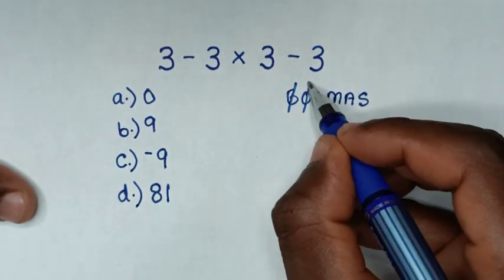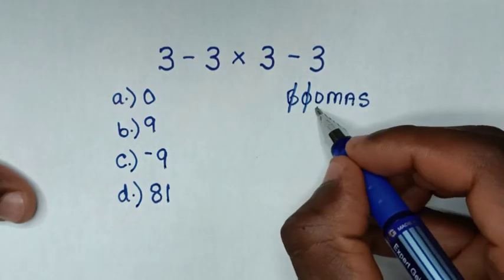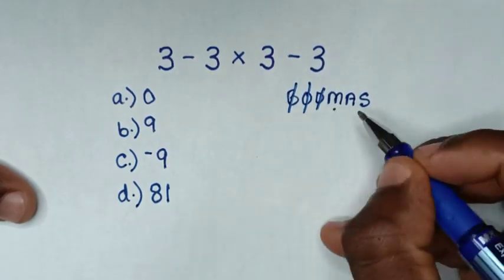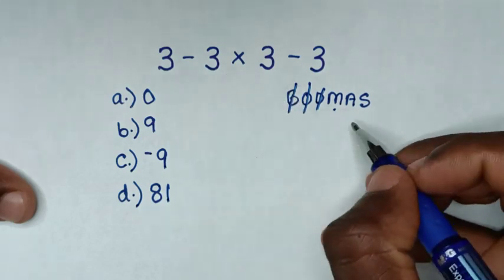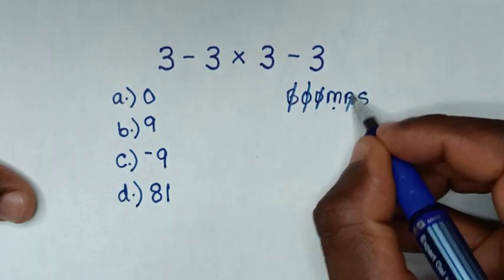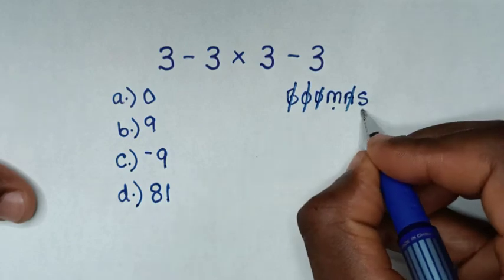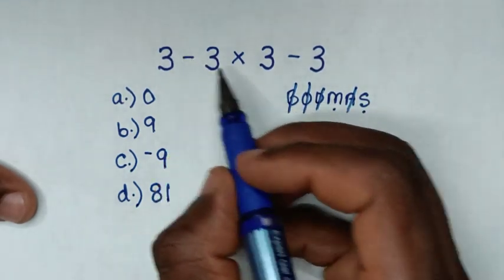D is for division—we don't have division. M is for multiplication—we have 3 × 3. A is for addition—we don't have addition. S is for subtraction—we have 2 subtractions.